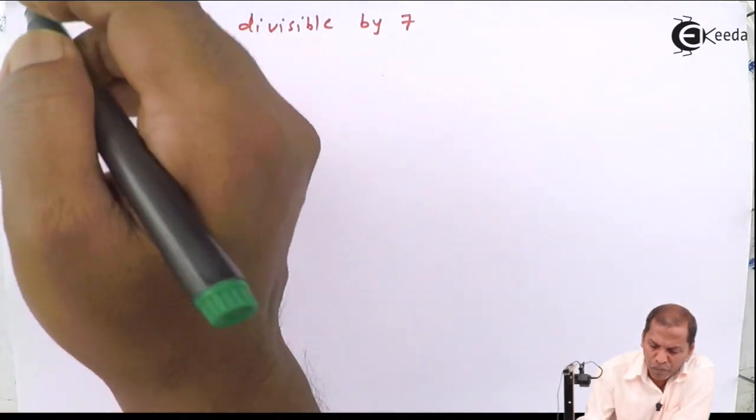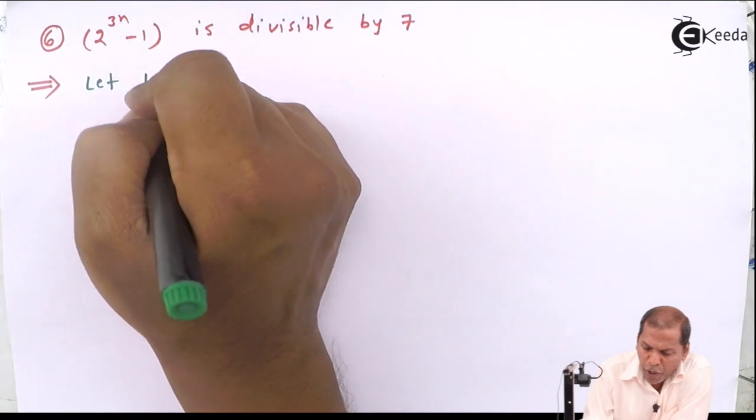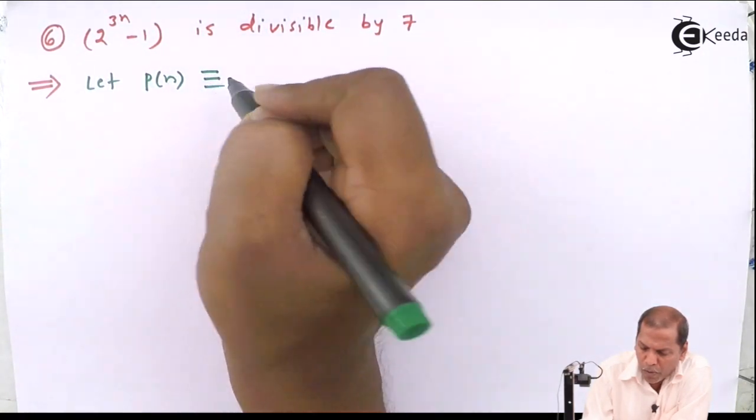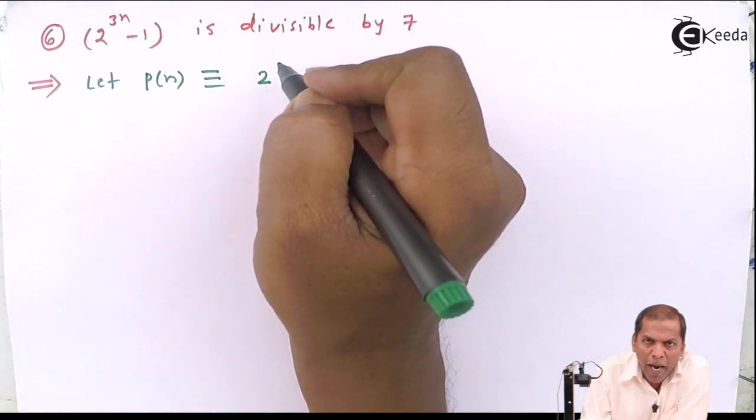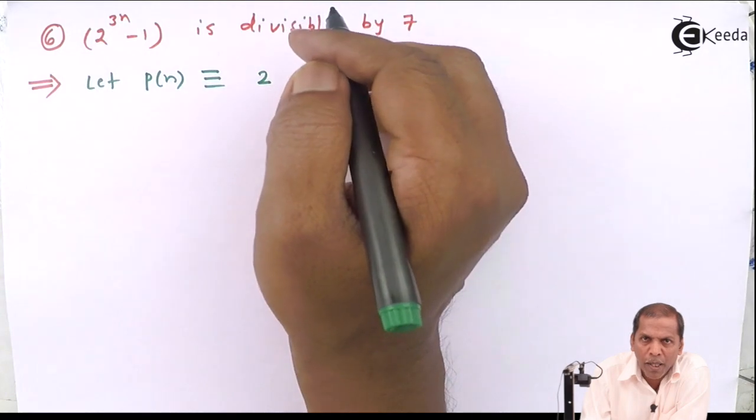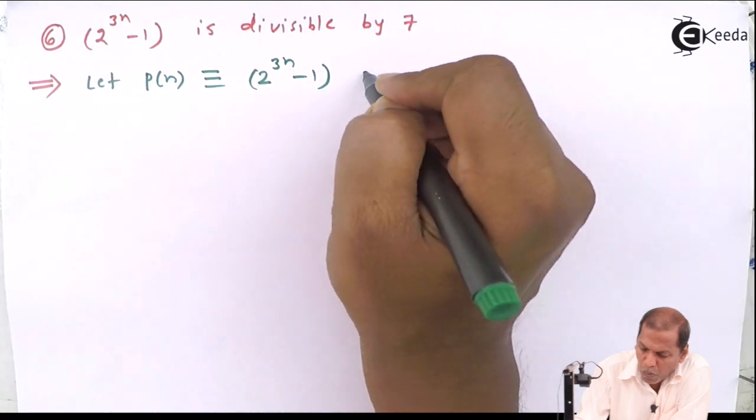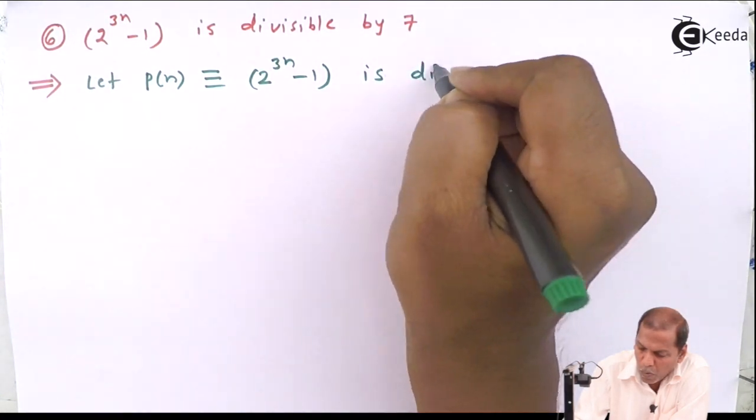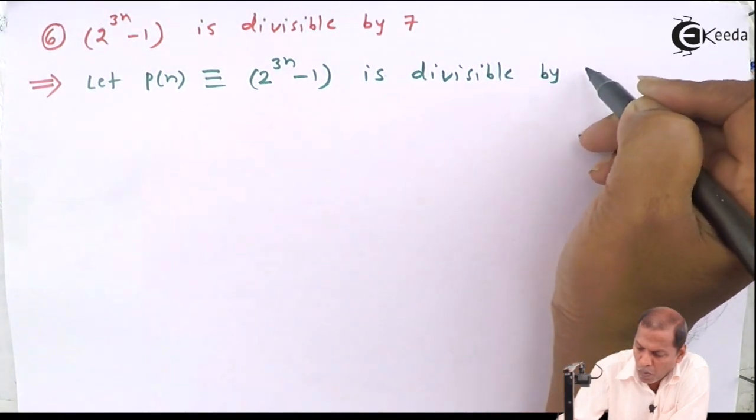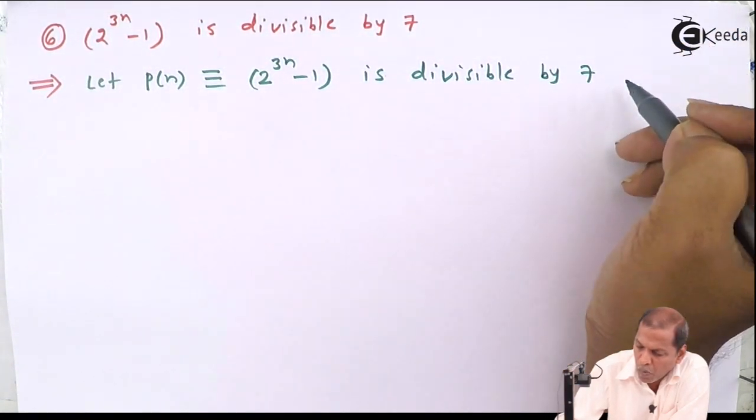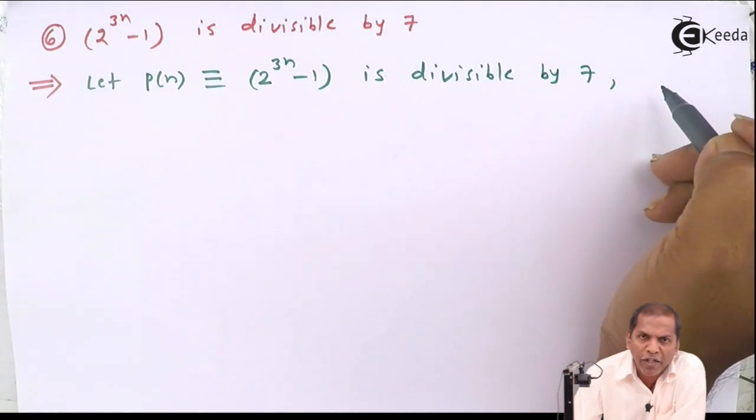Now let's see the solution. First of all, let P(n) denote 2 raised to 3n minus 1 is divisible by 7 for all n belongs to the set of natural numbers.